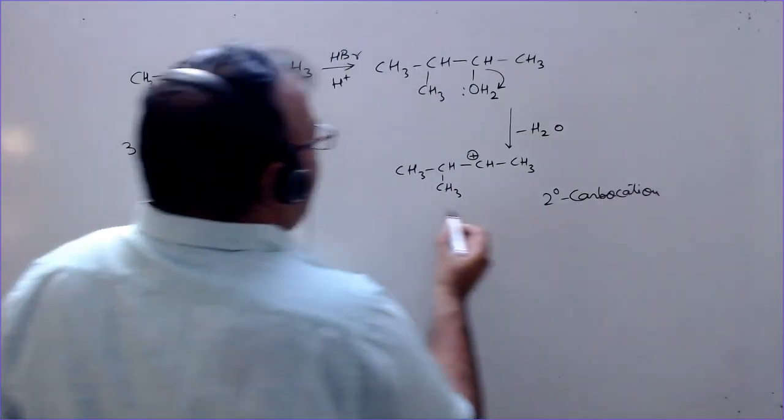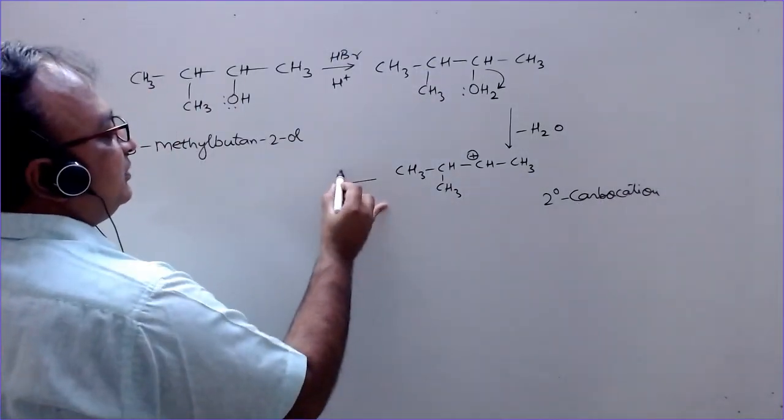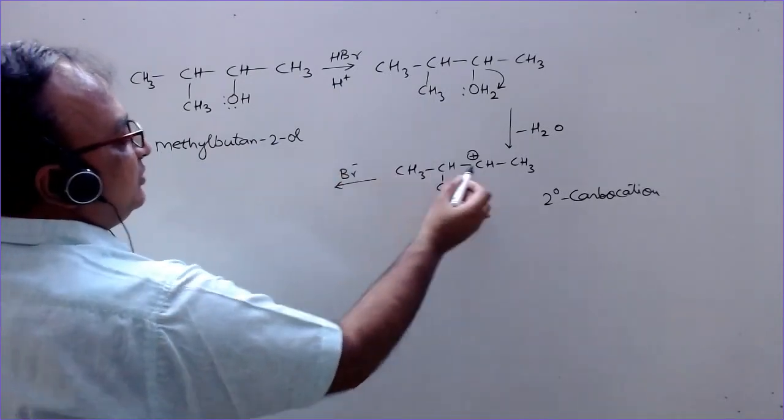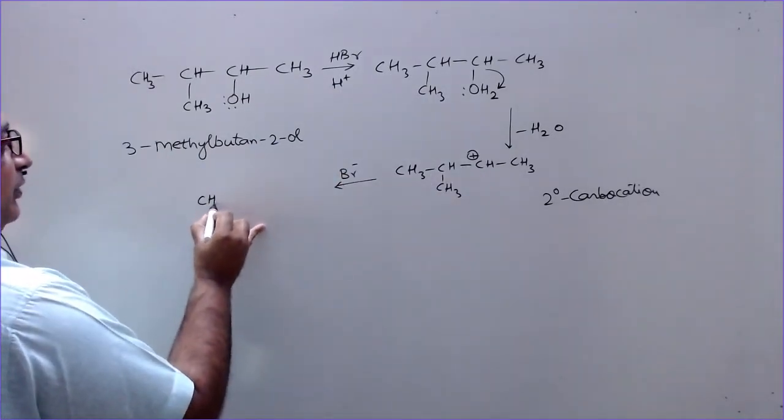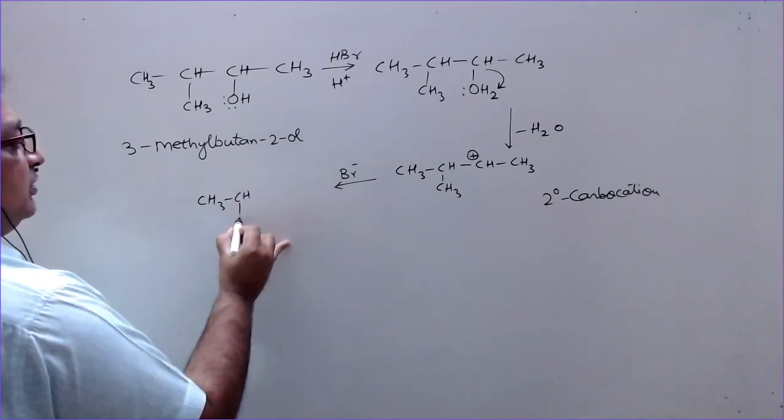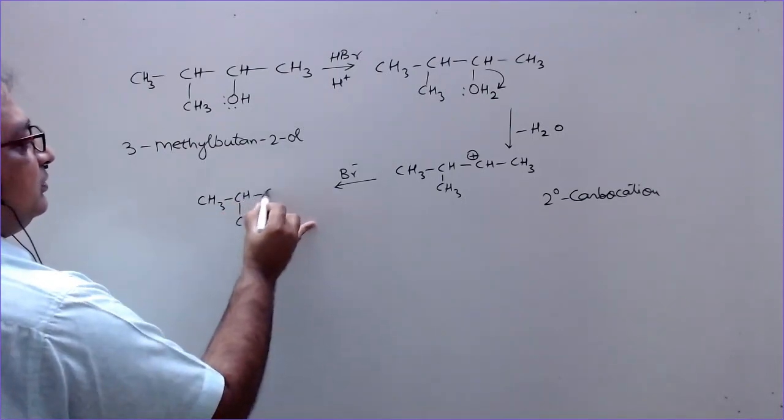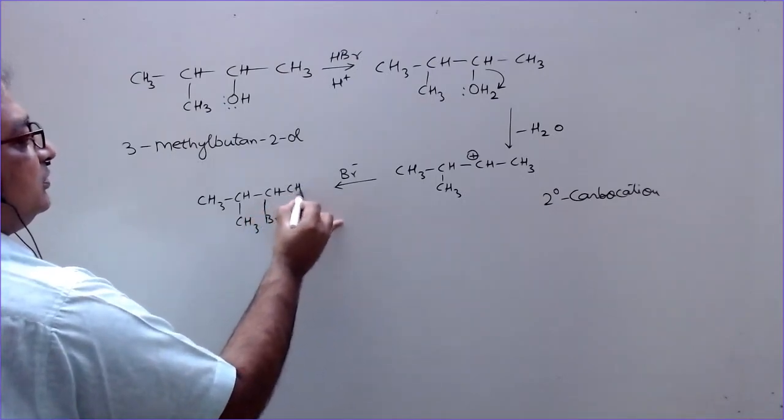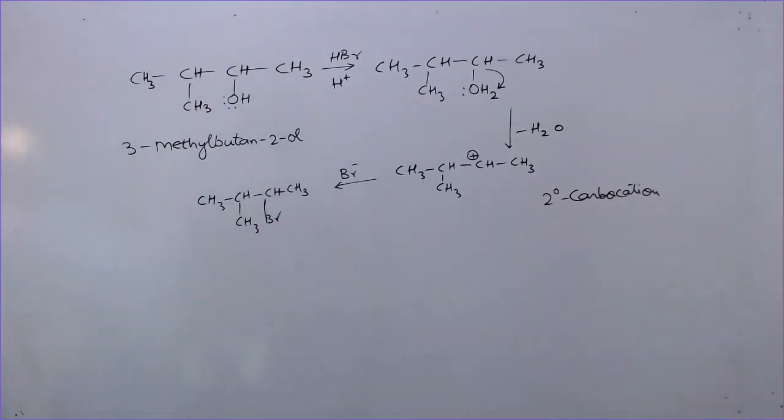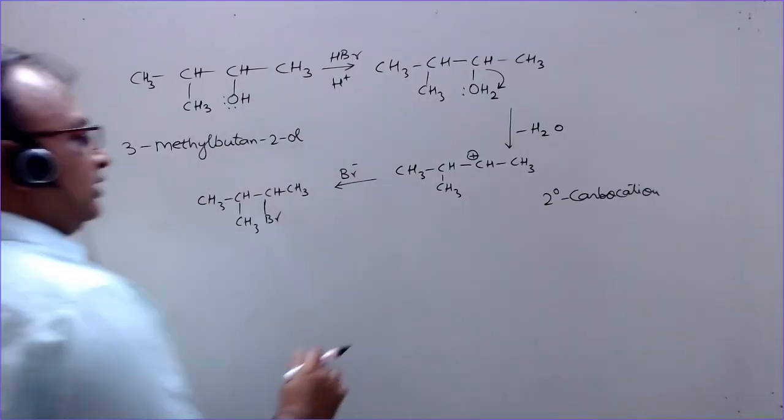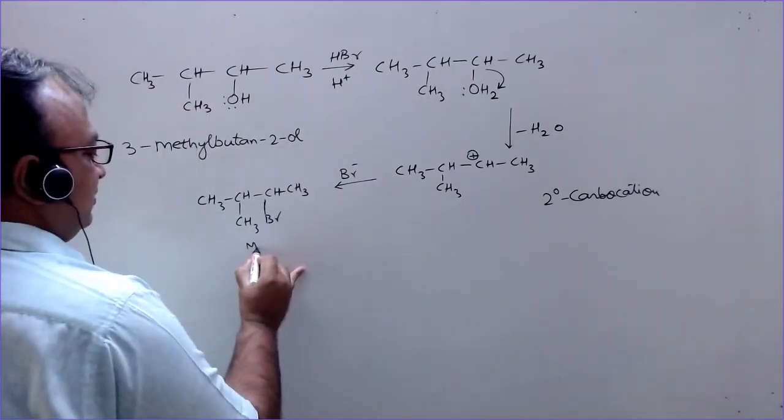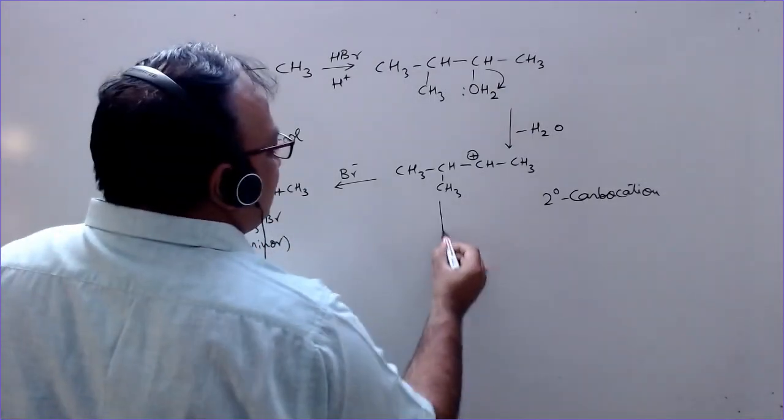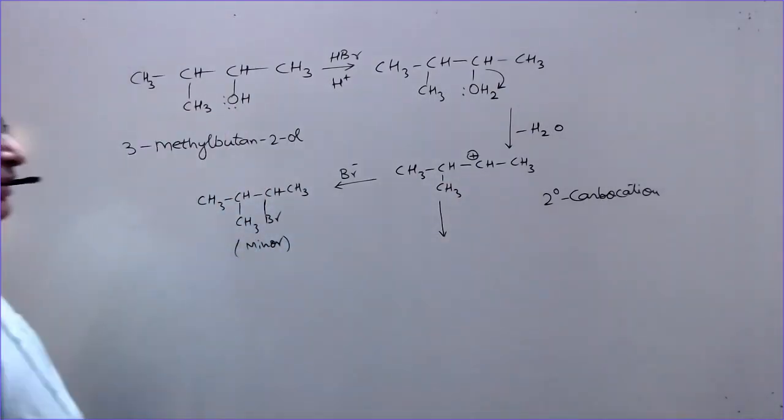Now if it reacts with Br-, then this negative charge obviously will attach here and we get the compound. Now this compound must be found but this is not the major compound. This is only a minor compound. Why? Because this secondary carbocation is less stable.